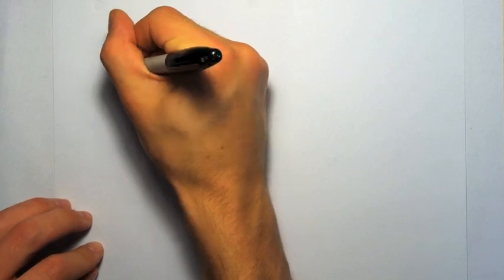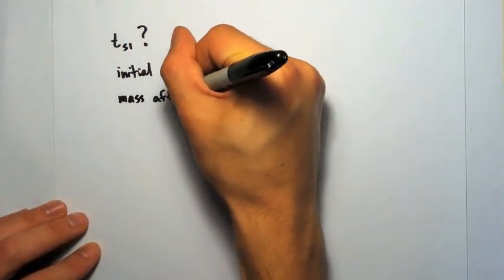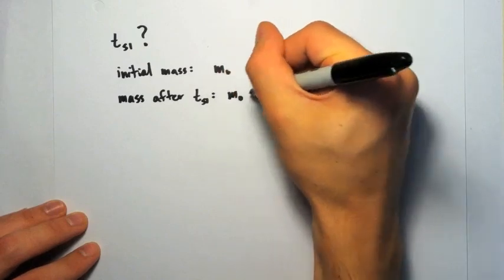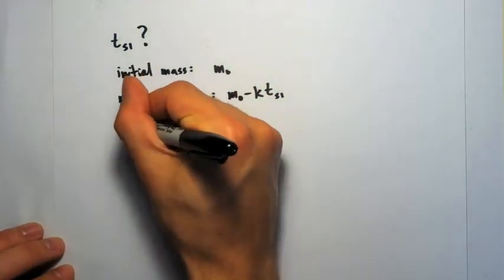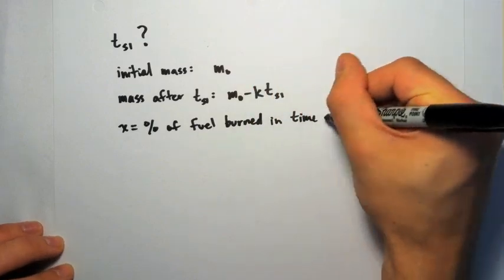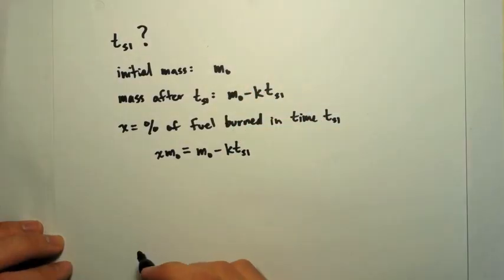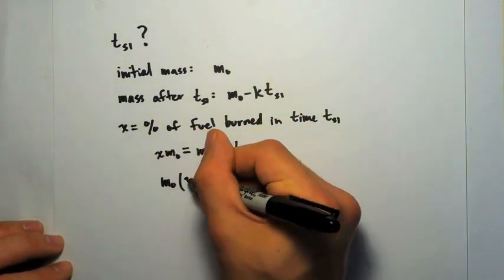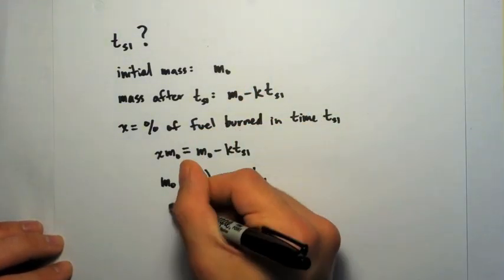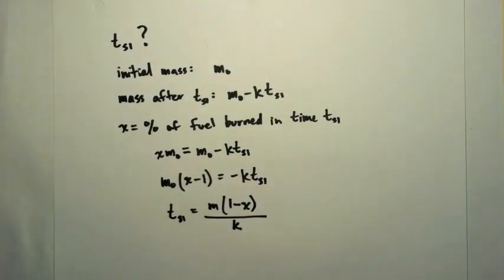Alright, so now to find the time of stage 1 and time of stage 2, we're just going to say at the end of, let's say the first stage, x percent of the initial mass has been burned in rocket 1. So we set x times m0 equal to m0 minus k Ts1, and then we just solve for Ts1. And we get m times the quantity 1 minus x, all divided by k.